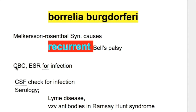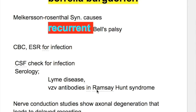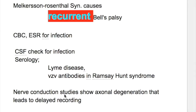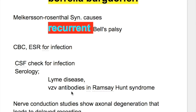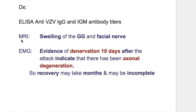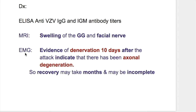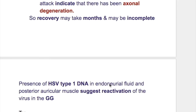Investigations include: blood — CBC and ESR for infection; CSF for infection; for sarcoidosis — ACE levels and chest X-ray; serology for Lyme disease; varicella zoster virus antibodies in Ramsay Hunt syndrome; ELISA testing; MRI; EMG; and endoneural fluid examination.